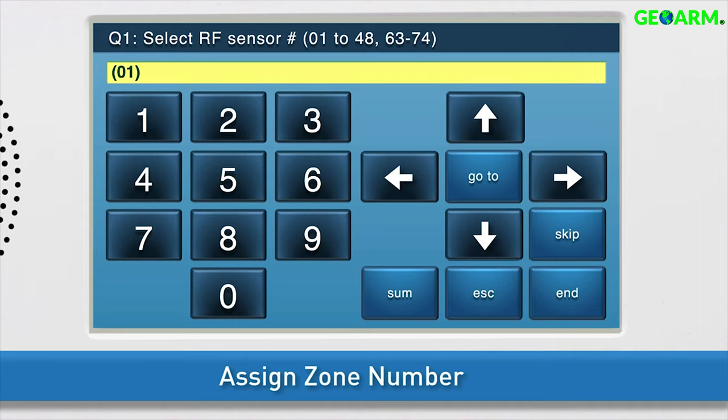You'll see the new selection appear in the answer box. Once the desired zone number displays in the answer box, press the down arrow to go to the next sub-question.